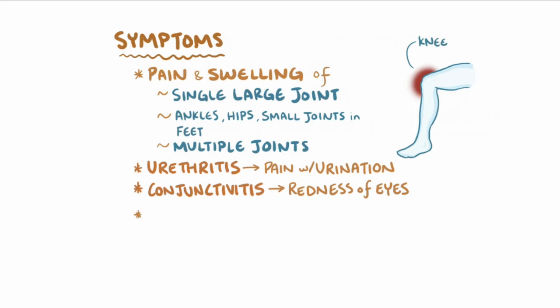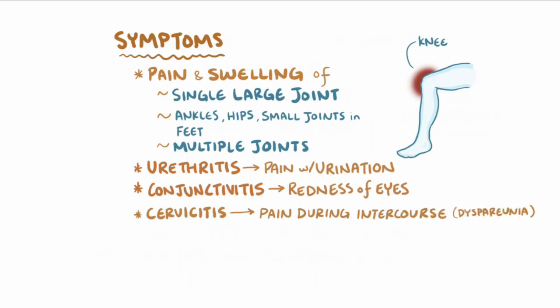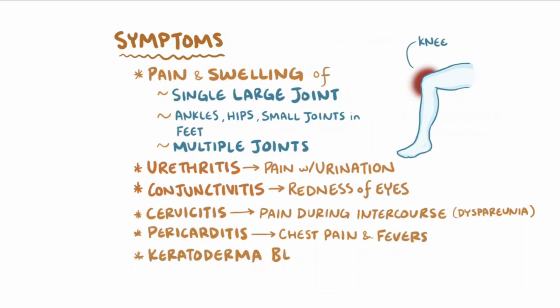There can be cervicitis in women, which can cause pain with sexual intercourse, called dyspareunia, and pericarditis, which will cause chest pain and fevers. Rarely, reactive arthritis can cause keratoderma blenorrhagicum, which is a skin rash that can appear on the feet.